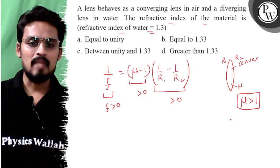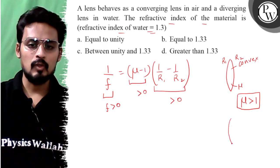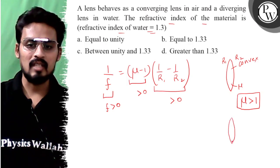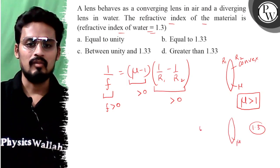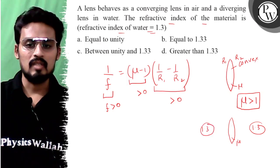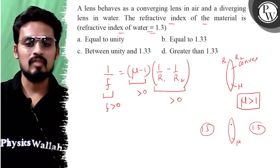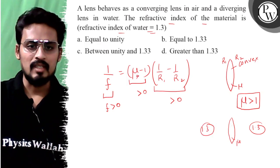Now let's talk about when I place this lens in a liquid. What was the refractive index of that liquid? The refractive index of water is 1.3.